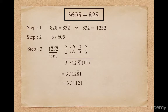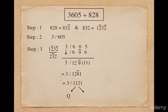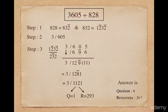This 1121 is greater than our original divisor 828, so I will have to divide 1121 by 828. It gives me quotient as 1 and remainder as 293. So the final answer will be quotient is 4 and remainder is 293.